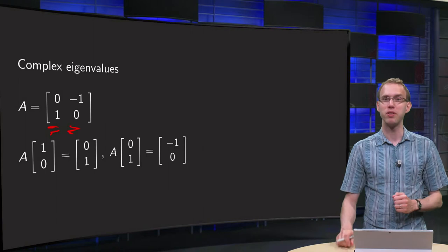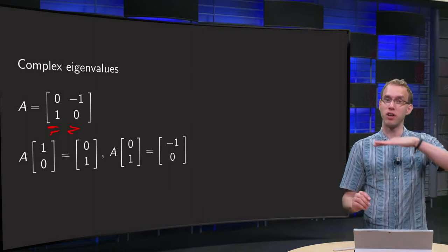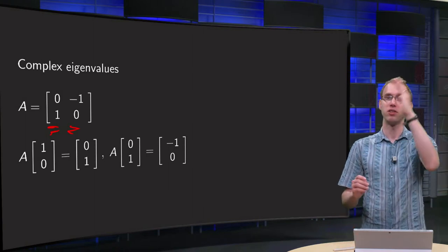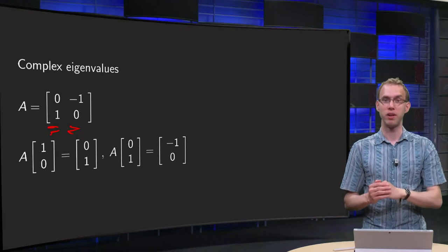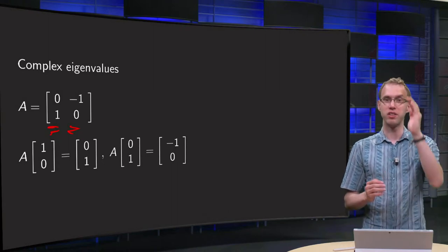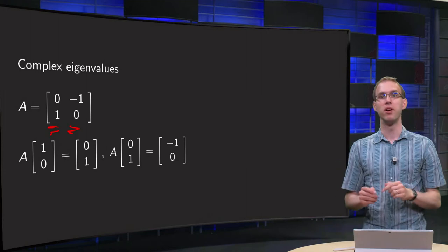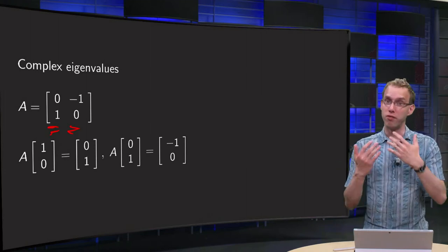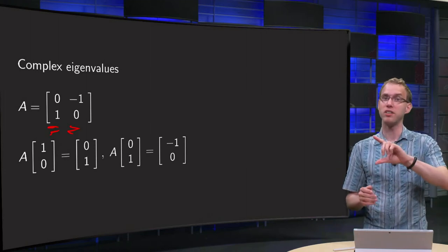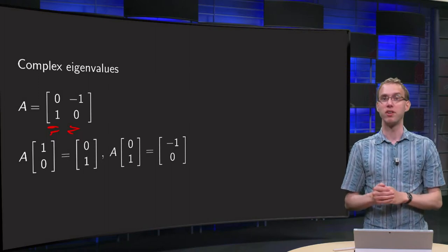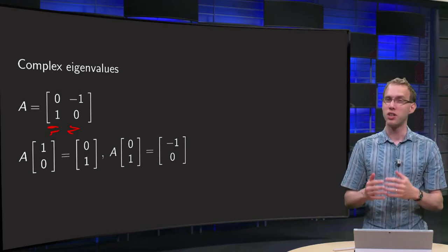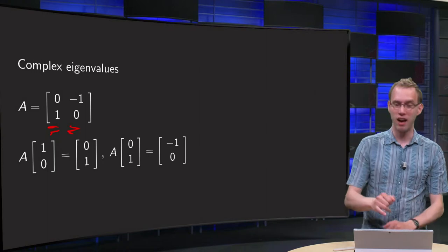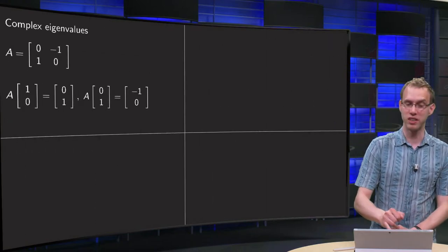So what happens? We start with [1, 0] and A times [1, 0] equals [0, 1]. If we start with [0, 1], we get [-1, 0]. So what do we see? Vectors are rotated counterclockwise 90 degrees. Would we be able to find eigenvalues and eigenvectors of such a matrix?